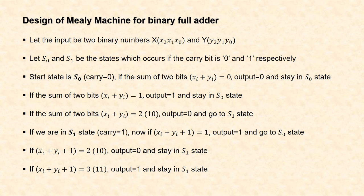If the sum of two bits equals 2 (binary equivalent 1,0), our output will be 0 and there is a carry of 1, so we move to S1 state. Now if we are in S1 state our carry is 1, so when adding bits we also add the carry: XI + YI + 1. If the sum is 1, our output is 1 and we go to S0 since there is no carry. If the sum of bits XI + YI + carry 1 equals 2 (binary 1,0), output is 0 and we stay in S1 because carry is 1.